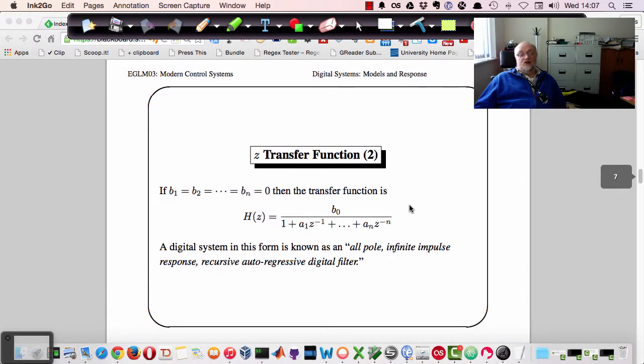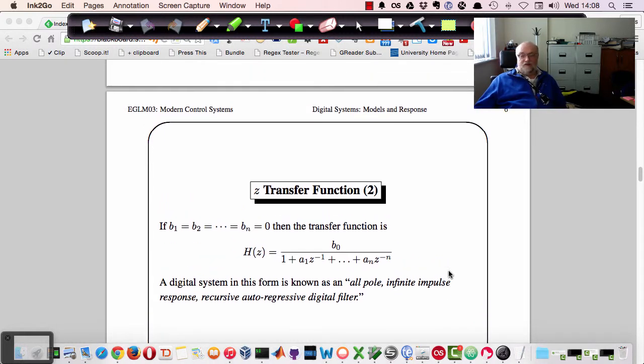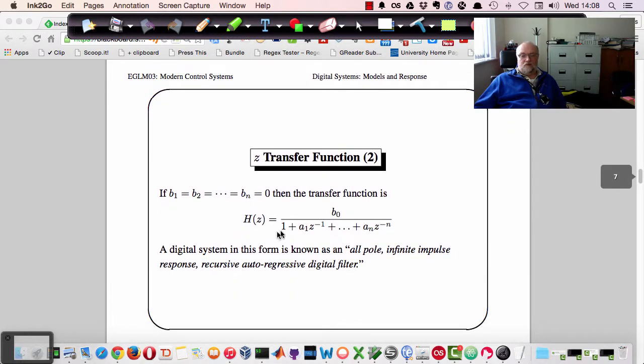If we wish, we could construct a different type of transfer function, which would have B's at zero, apart from the zero term. And then this system consists just of poles. So it's an all pole infinite impulse response recursive autoregressive digital filter.